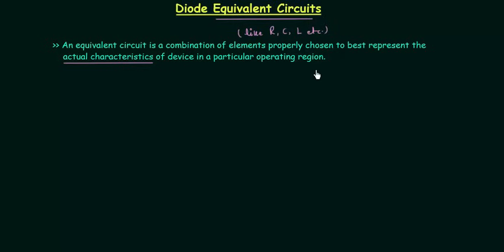Now there is one question: why do we need an equivalent circuit? We cannot use traditional circuit analysis techniques like Thevenin's theorem, Norton's theorem, or superposition theorem with an actual device.